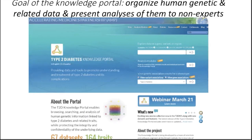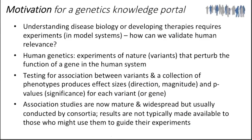Why does this matter? Understanding disease biology or developing therapies requires experiments and model systems, and these must be validated in humans and must have human relevance. Human genetics provides experiments of nature where you can observe variants that perturb the function of a gene in a human system. To test those, you can perform association studies where you take the association between variants and collections of phenotypes and measure the direction, magnitude, and significance of that effect in a given variant or gene.